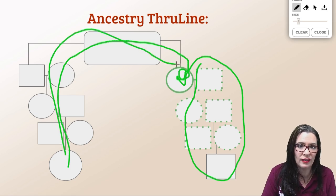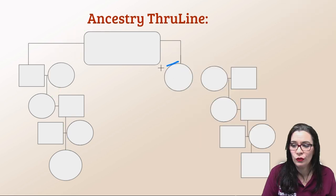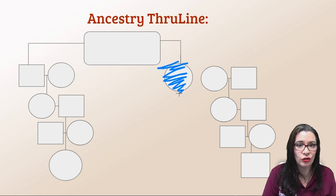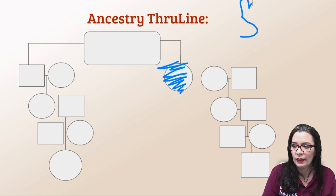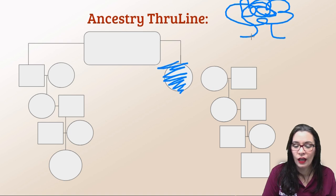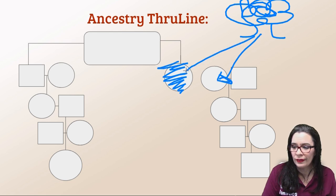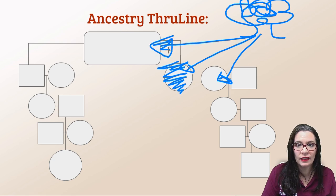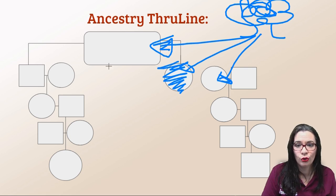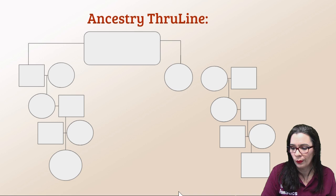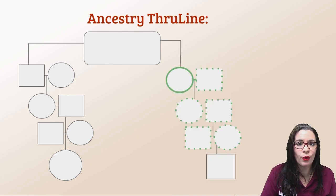When you do, instead of having dotted boxes you will have solid boxes because you will have proven that match. But what if you don't have this person in your tree? Maybe there's a third person's tree that has both people — which are really the same person. What ancestry does is look at your match's tree, your tree, and the third tree that connects the two together, and once again you have a potential relationship tree. That is an ancestry through line.